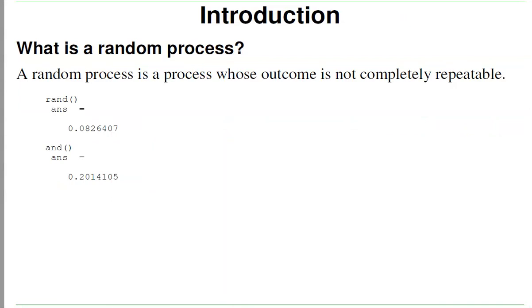Now starting out, what is a random process? A random process is a process whose outcome is not completely repeatable. For example, the RAND function in MATLAB gives you a different answer every time you type it.